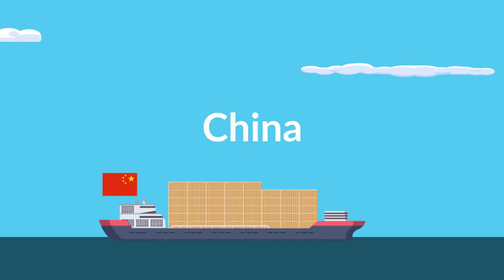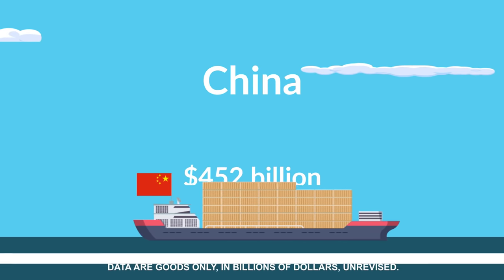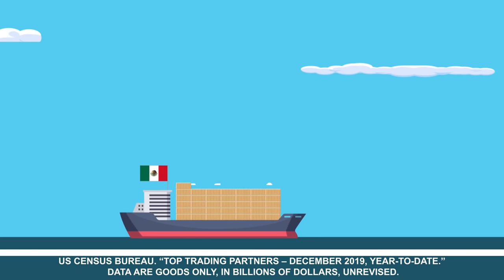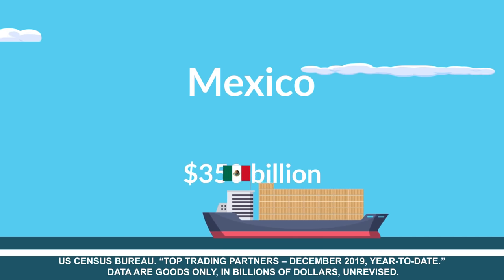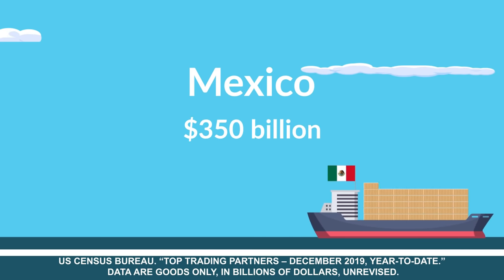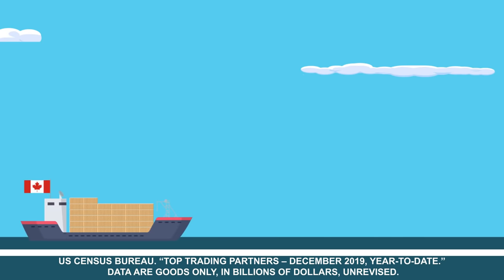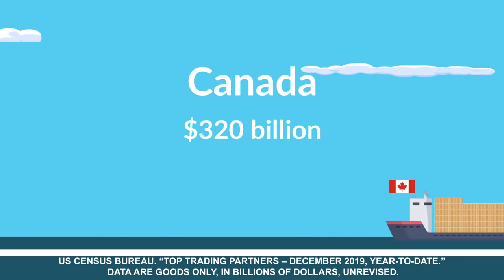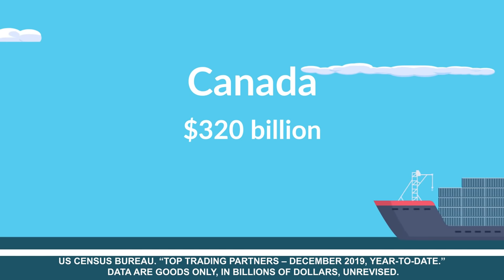While the United States trades with countries all around the world, three nations in particular make up the U.S.'s top trading partners, according to 2019 data. The top importers to the U.S. are China, with about $452 billion worth of imports, Mexico, with over $350 billion worth of imports, and Canada, who sends around $320 billion worth of imports to the U.S.